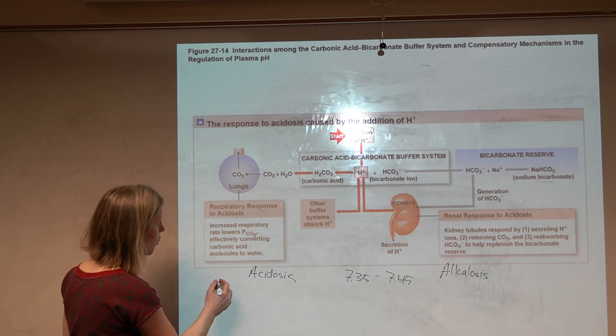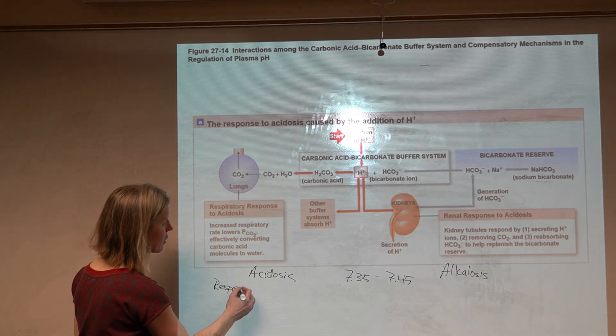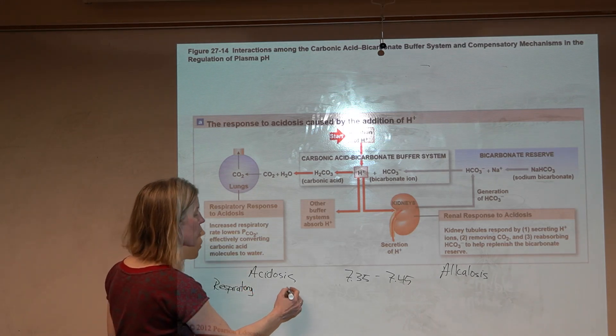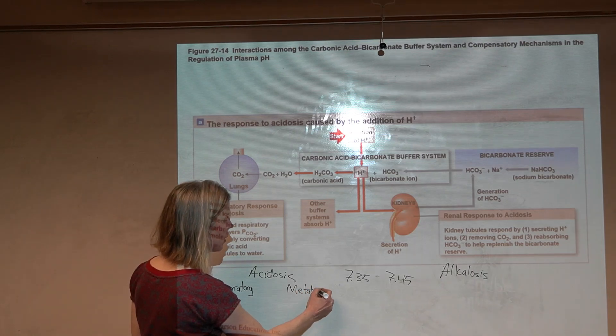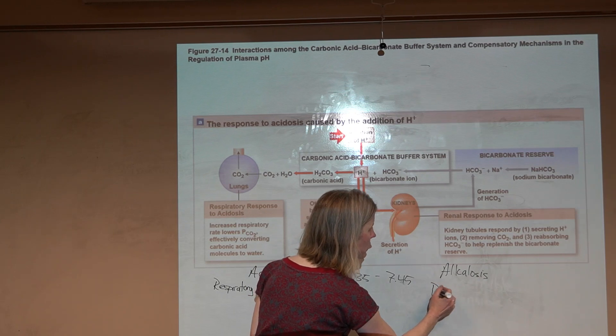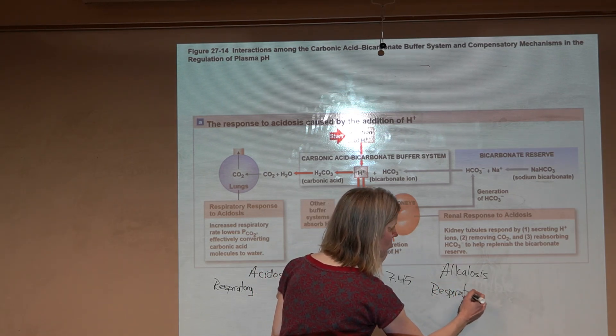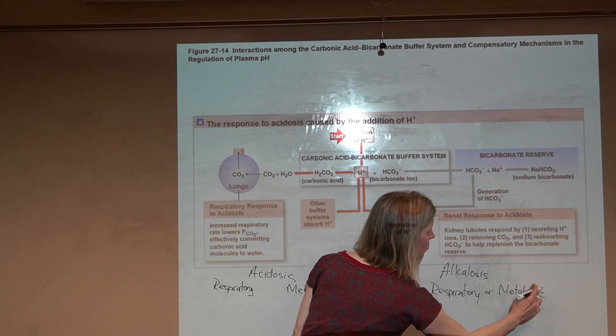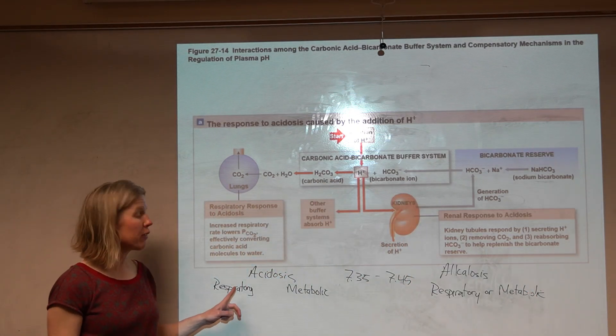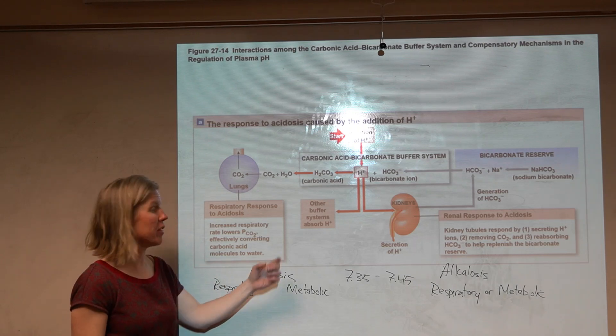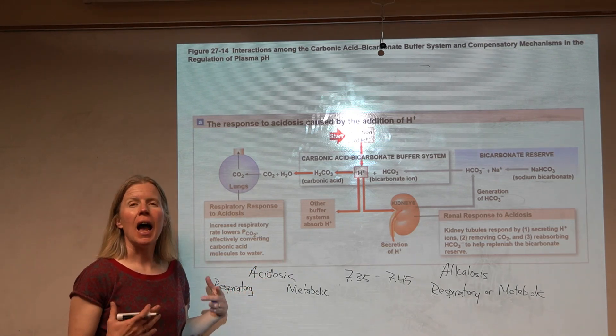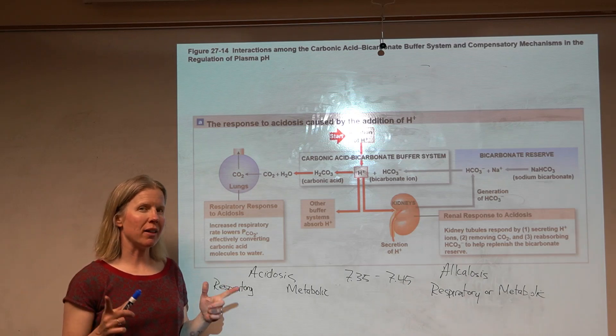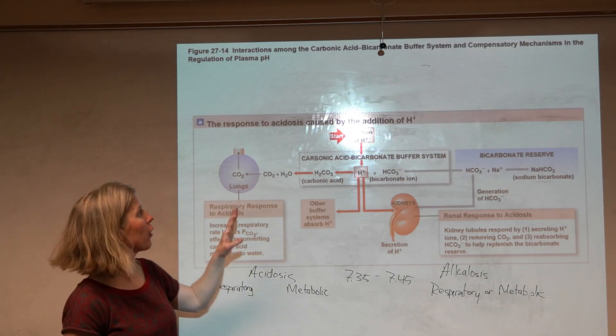Acidosis can form in a few different ways. We can get respiratory acidosis or metabolic acidosis. Actually, true on alkalosis as well - it's either respiratory or metabolic. Really, it tells you the cause of the acidosis or alkalosis. Respiratory acidosis is going to be caused when there is a problem at the lung.